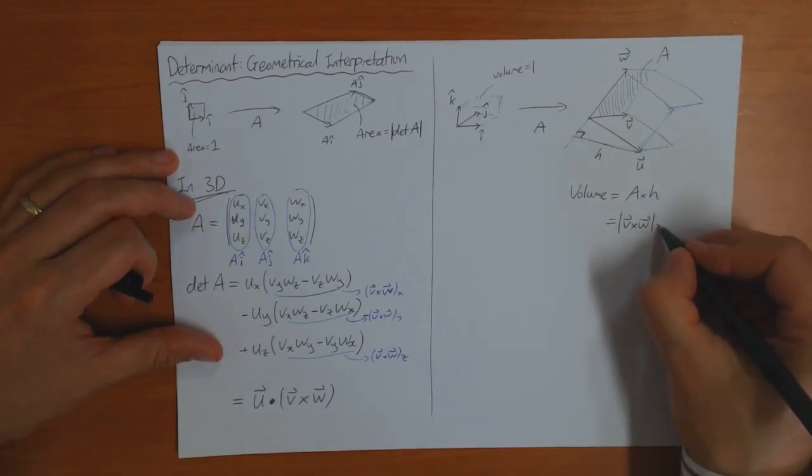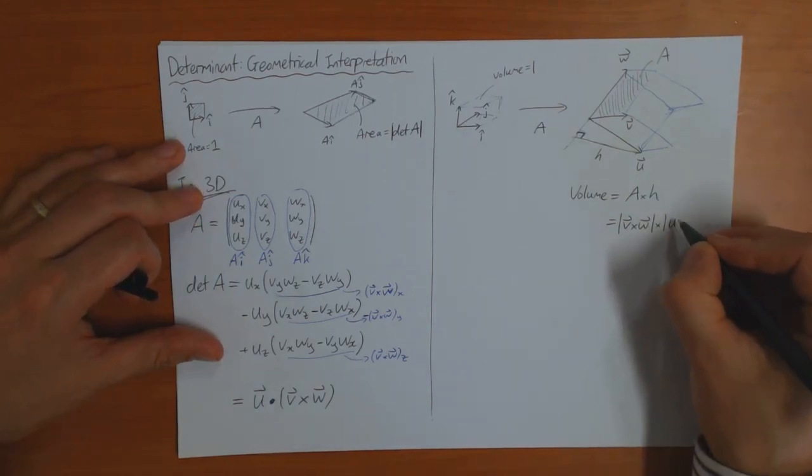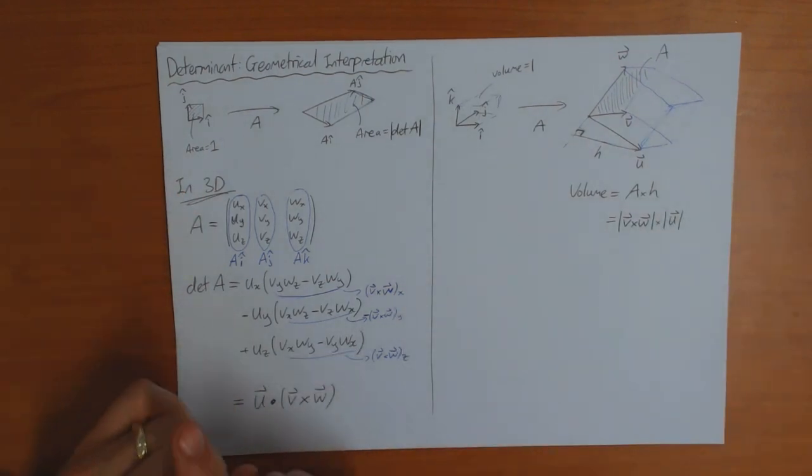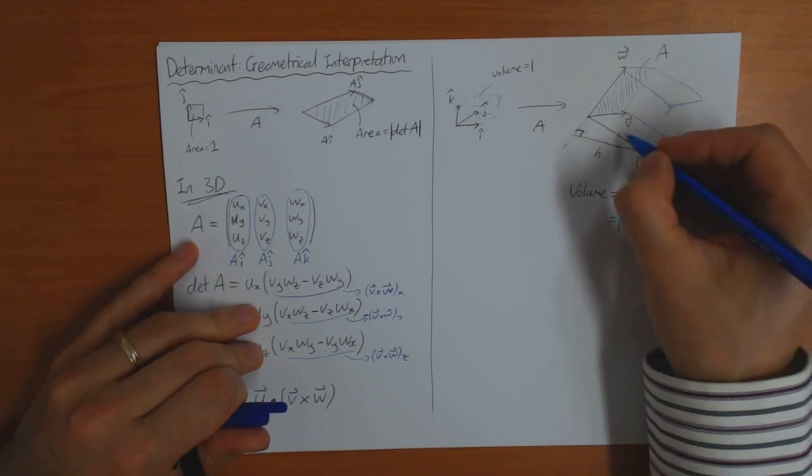And H, H is the length of U times the cosine of the angle theta, where theta is this angle here.